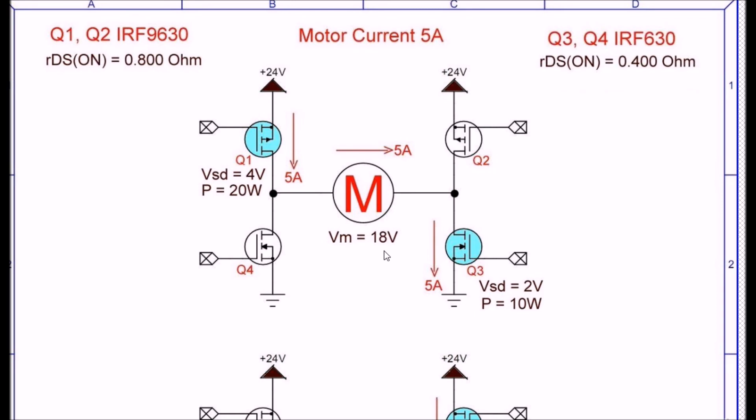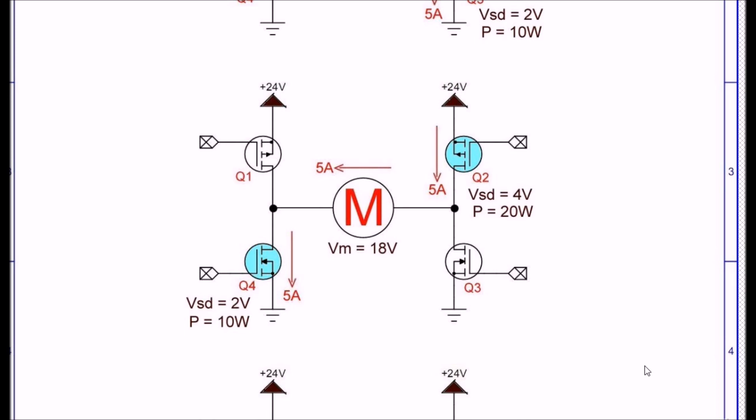All right here we are again. I've turned on Q2 and Q4 this time to create a path, but I've got the same problem again. The p-channel at Q2 is going to chew up 4 volts at 20 watts and the N-channel at Q4 is going to chew up 2 volts at 10 watts. So I've wasted 6 volts and 30 watts of power just in the transistors.